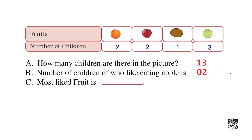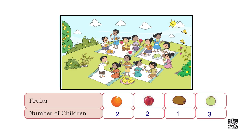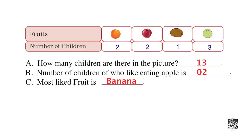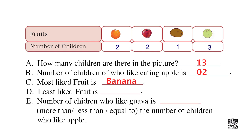Question C: Most liked fruit is? Let us see — 3 are eating guava, 2 are eating apples, 2 oranges, 1 is eating kiwi, and 5 are eating banana. So the answer is banana. Most liked fruit is banana. Answer the rest of the questions on your own. You see how easy and interesting it can be to learn and work with data — share this learning with your friends!